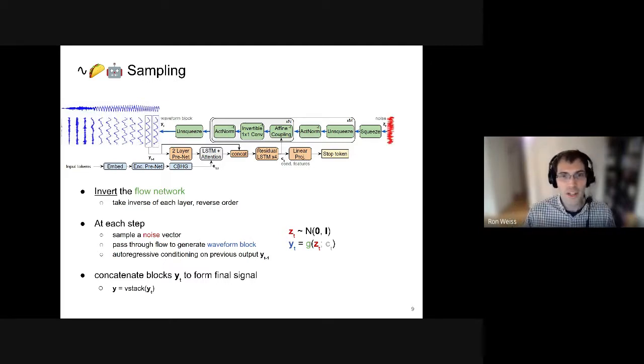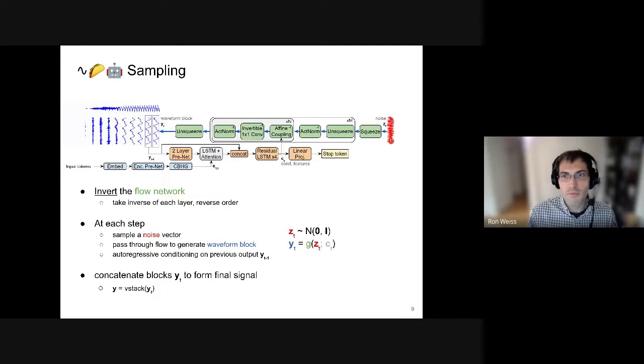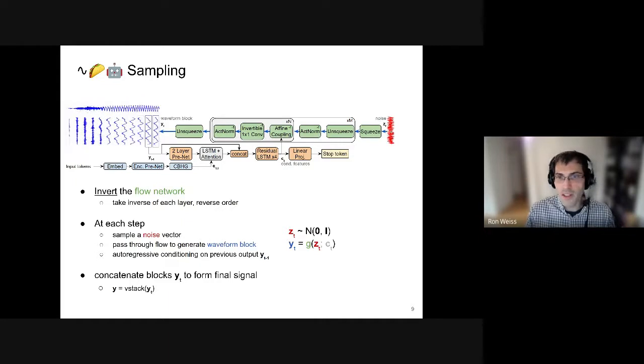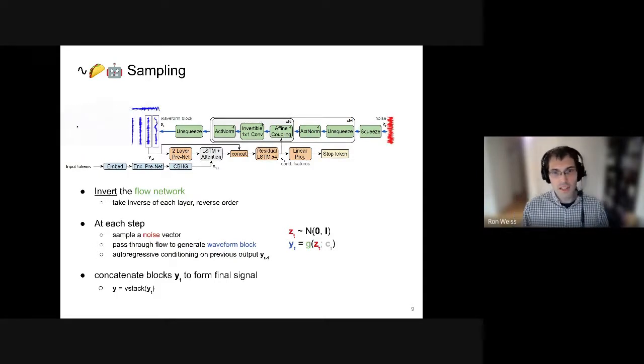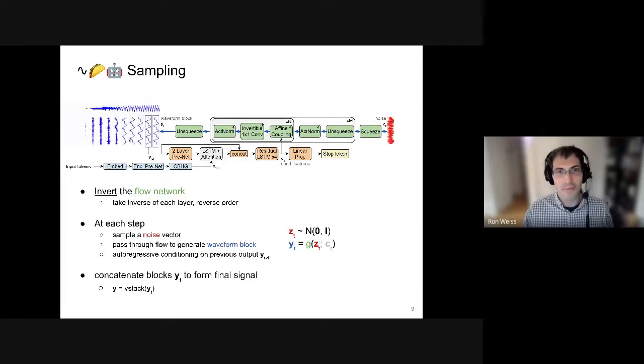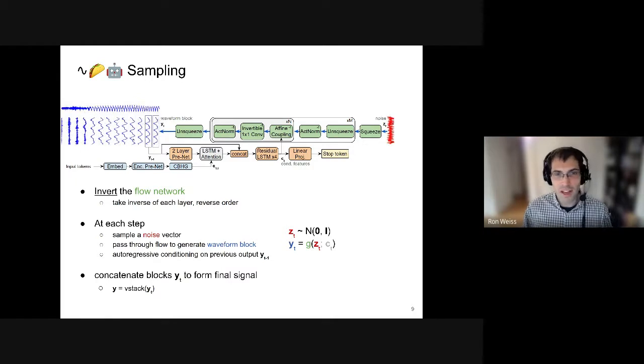So sampling basically uses this network in reverse. And so what we're going to do here is we're going to take the same flow that we had before, and we're just going to invert it. And by that, I mean, we're going to take the inverse of each layer in this network, and then just we're going to run through it in the reverse order. So what we do to generate a waveform, a block, a single frame, essentially, is we're going to sample a noise vector from a spherical Gaussian, we're going to pass it through the inverse of the flow from before with the same autoregressive conditioning that we had. And that's going to give us a new waveform block. And then we're just going to repeat this process to generate the full signal. And so once we have the sequence of waveform blocks, in order to generate the final one-dimensional waveform that we can actually listen to, we don't do any even completely unsophisticated signal processing like overlap add or anything. We're just going to concatenate these waveform blocks, and that's going to give us the final 1D signal.